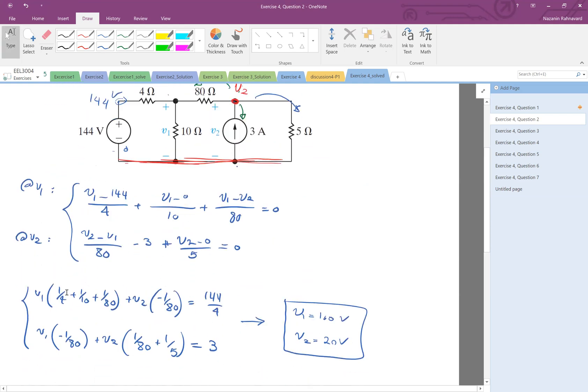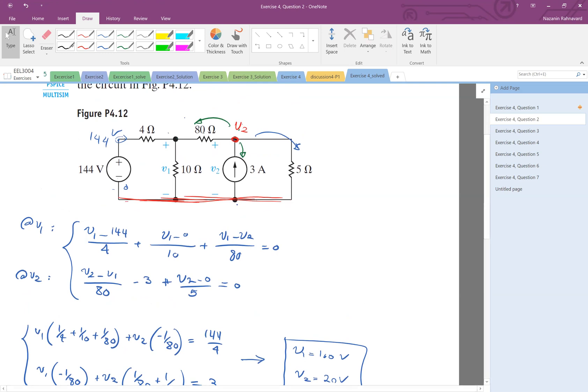Solving it, V1 is 100 volts and V2 is 20 volts.